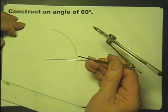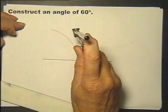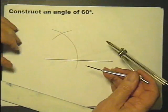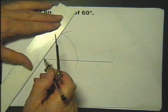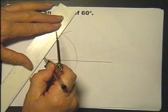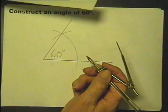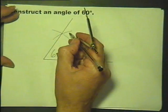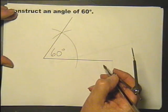Keep that radius, whatever you do don't change it or it won't work. Stick the compass point in there and then draw another arc. Believe it or not, you will find that that is 60 degrees in there. As I mentioned earlier, these arcs must be clear to the examiner because that's what you're getting your marks for, for constructing it.